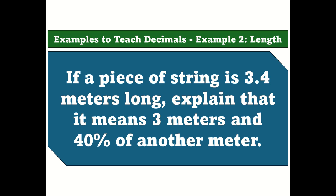Example 2 — Length. If a piece of string is 3.4 meters long, explain that it means 3 meters and 40% of another meter.